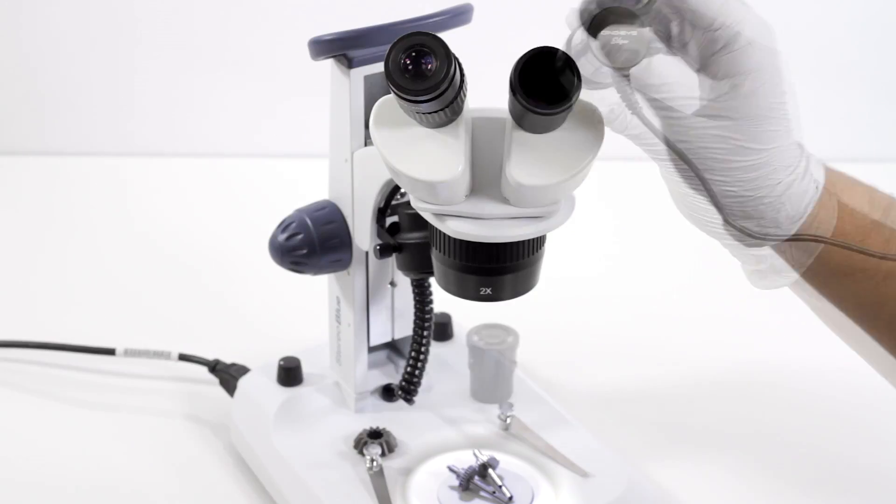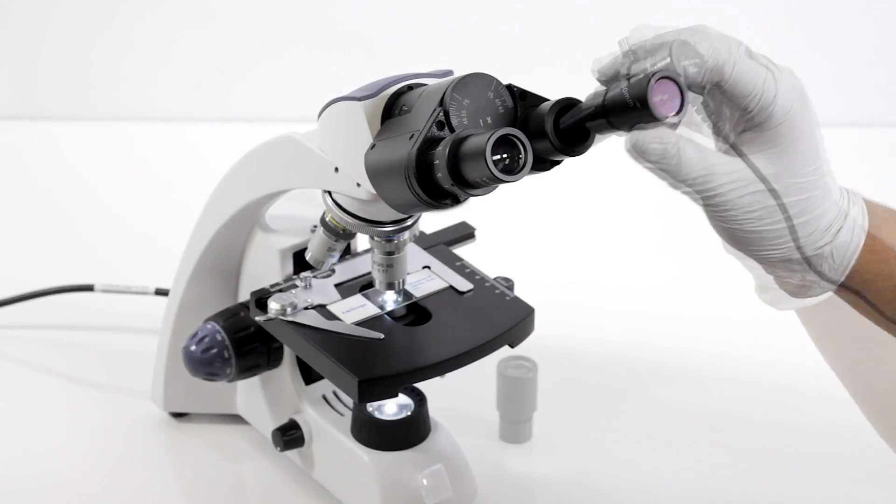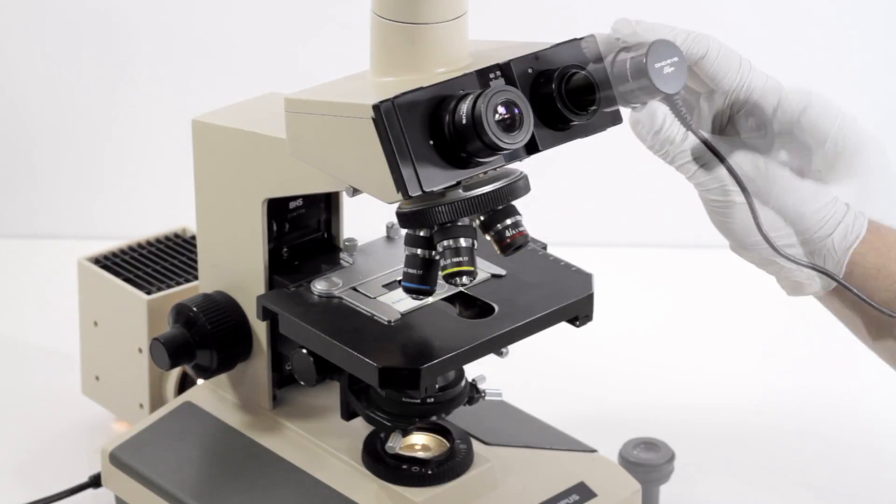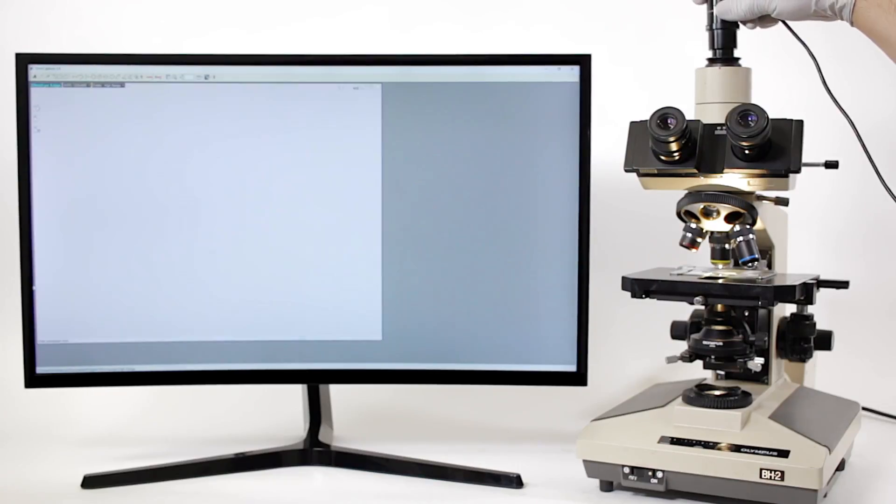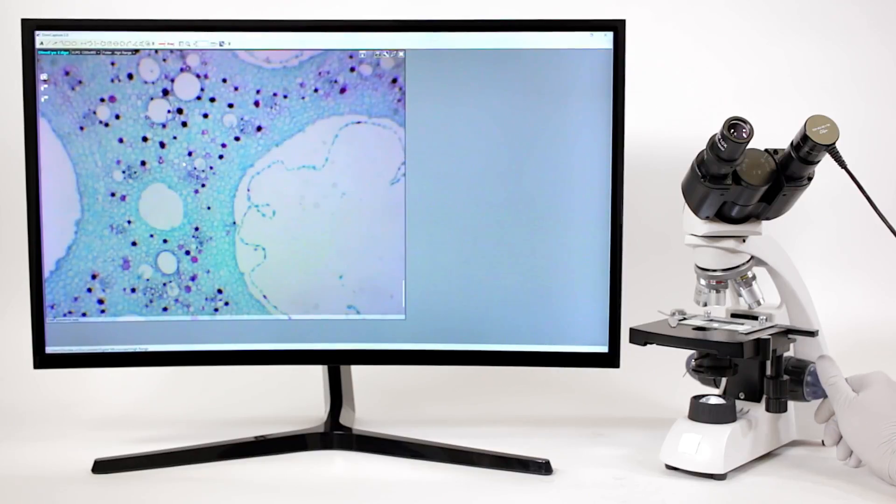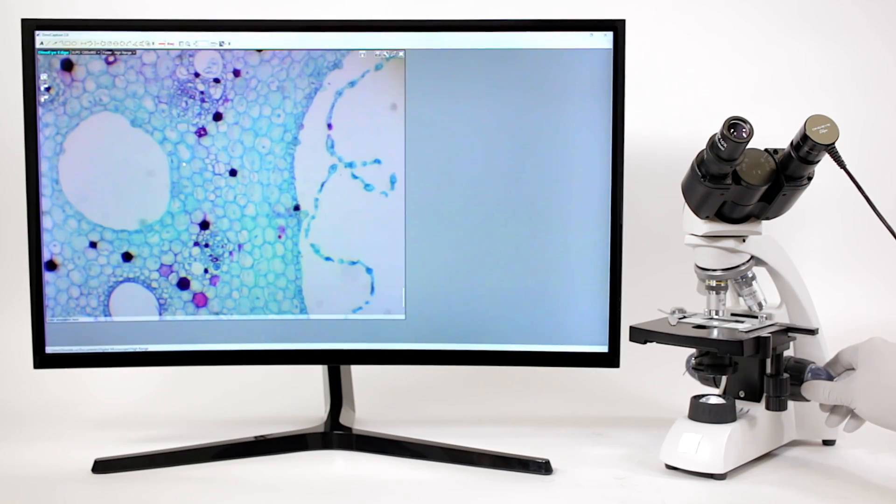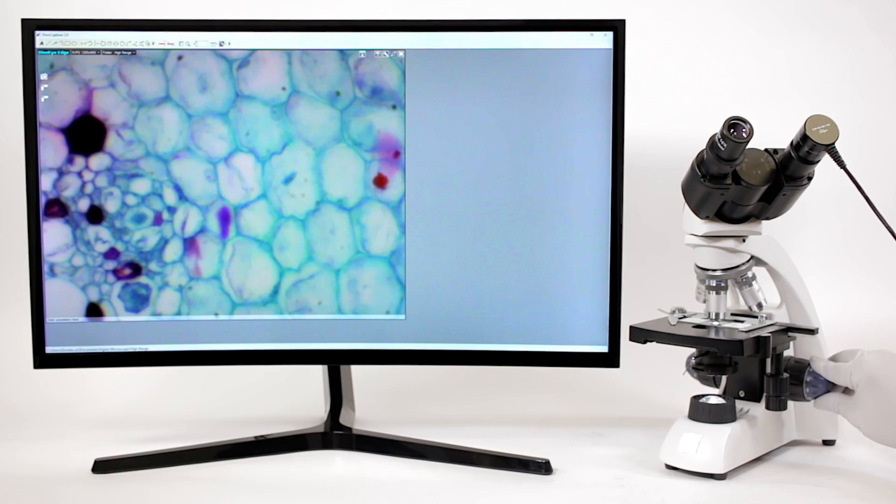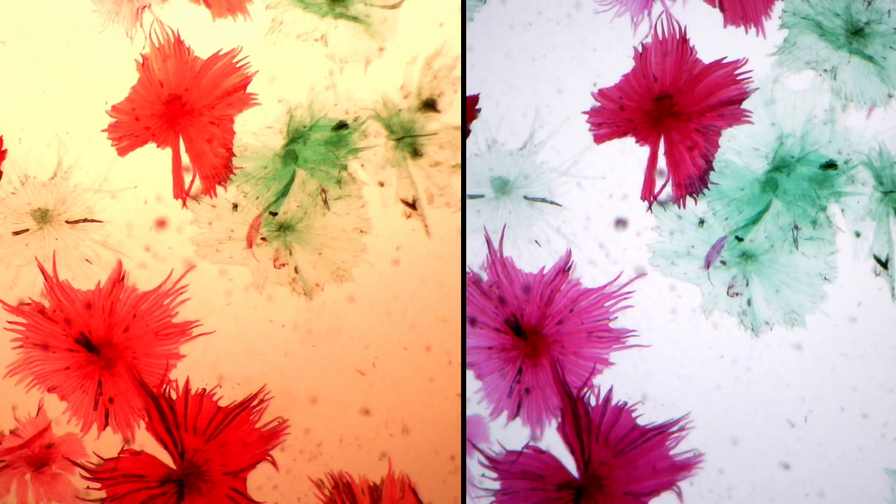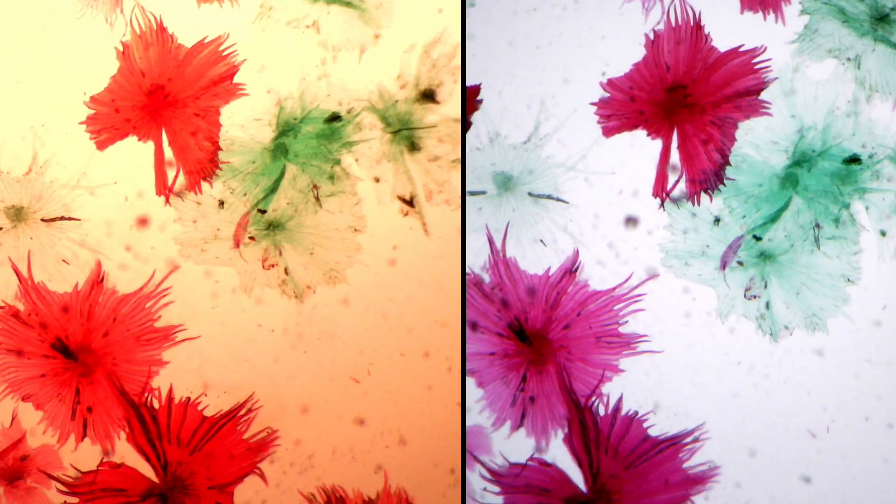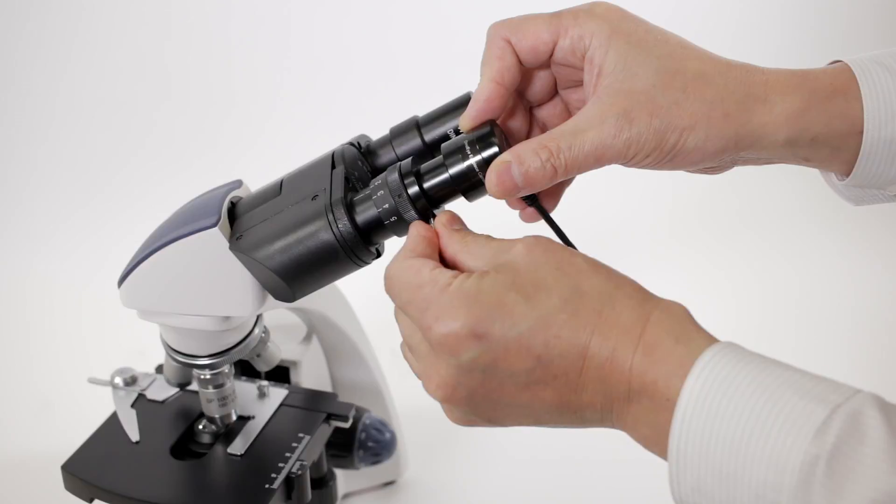Eyepiece cameras work simply by replacing your microscope's eyepiece slot with the eyepiece camera, allowing convenient viewing and image capture features through a computer with the included DinoCapture software. The AM7025X is parfocal by using the included adapters to secure the eyepiece camera at the correct focus distance.